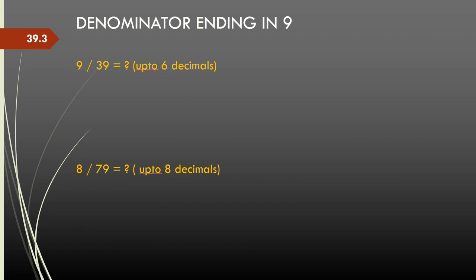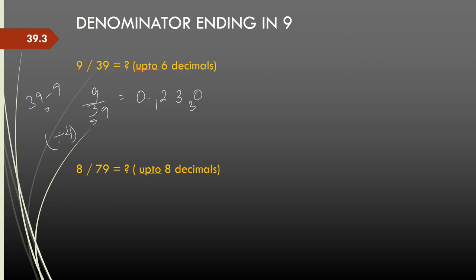So let us say I want to evaluate 9 by 39 up to 6 or 8 decimals. For 39, I take 1 more than 3, which is 4. So this becomes 0 point. I will start dividing 9 by 4: 4 twos are 8, 1 is the remainder; 4 threes are 12; then 4 zeros. I got 30 — and 39 minus 9 is 30, and I got this 30 here. So the next digits will be 9 minus 2 = 7, 9 minus 3 = 6, 9 minus 0 = 9. So the answer is 0.230769 and then it will repeat — 230769 will repeat again. See how easy it is.